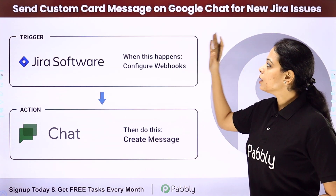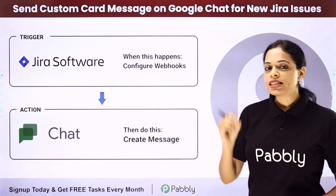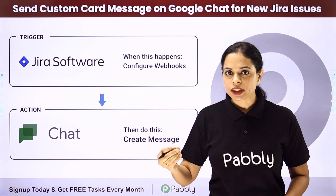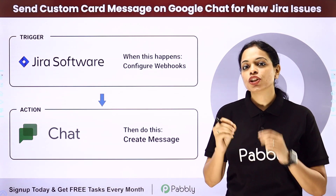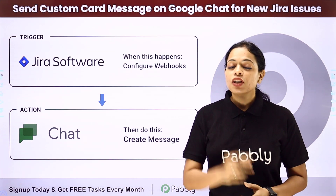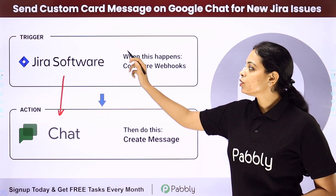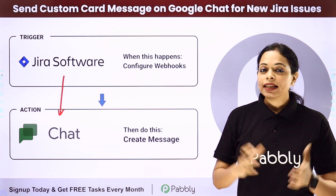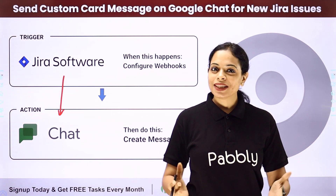In this video, we are going to understand how to send a custom card message on Google Chat for new Jira issues created. My objective is that every time an issue is created in Jira Software in any particular project, automatically a notification along with a custom card should be sent to my team on Google Chat. I will be integrating these two applications using Pabbly Connect, where my trigger application will be Jira Software and my action application will be Google Chat.